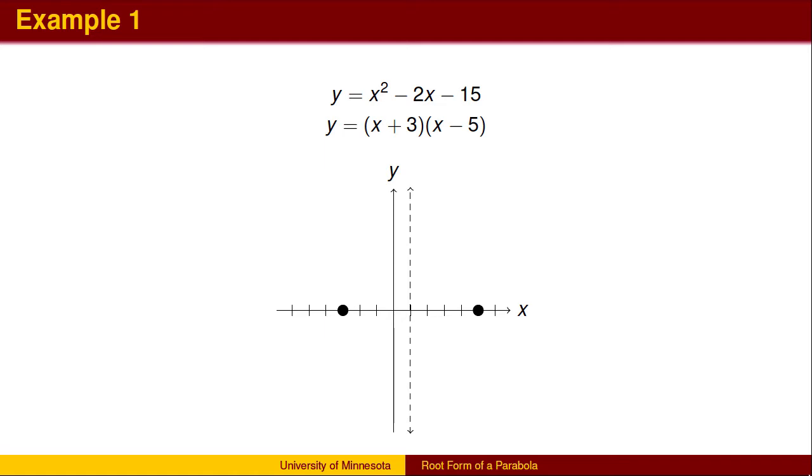In general, you can find the axis of symmetry by averaging the roots. If we plug x equals 1 back into the original equation, we find the y-coordinate of the vertex to be at negative 16. Once we have plotted the vertex, we can sketch the graph.